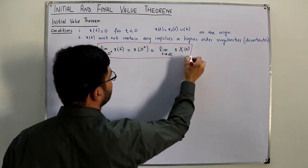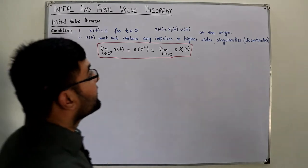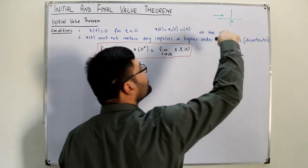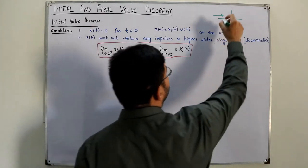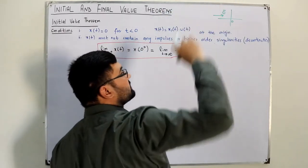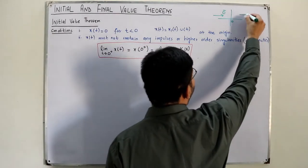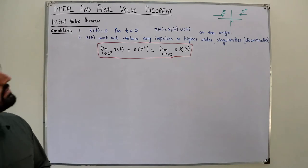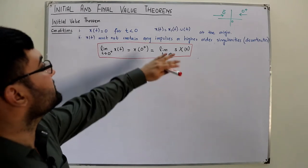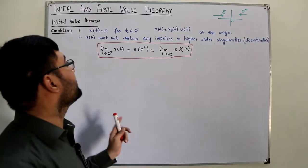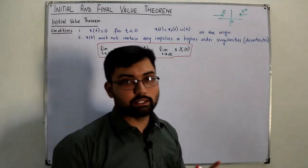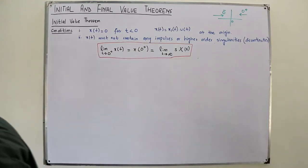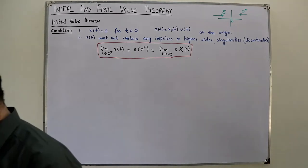Now, 0+ and 0−: if you approach the origin from the left side, the value just before the origin is called 0−. If you approach from the right side, that value is called 0+. We write 0+ here because this signal is already 0 on the negative side, so we write x(0+) since it is not 0 from that positive side. This is your initial value theorem.